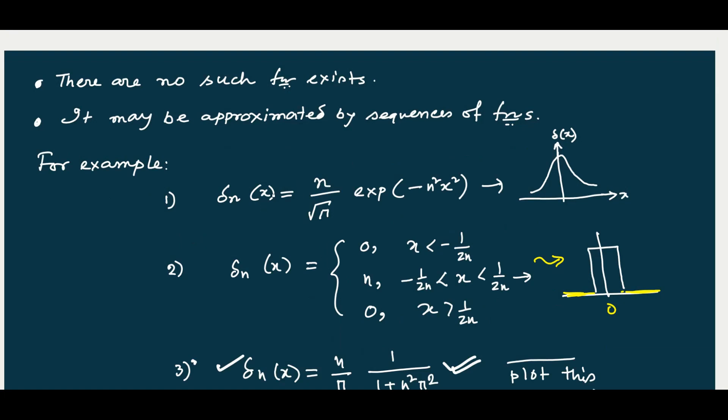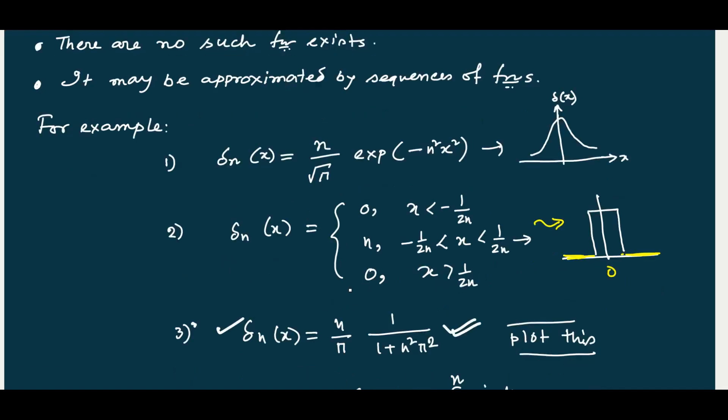There are sequences which approximate Dirac delta behavior. One such approximation is delta_n(x) = (n / sqrt(pi)) * exp(-n² x²). This is a very famous Gaussian function — if you increase n, it becomes more like a bell shape sharply peaked at x equals zero.